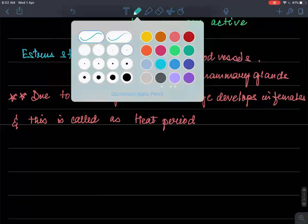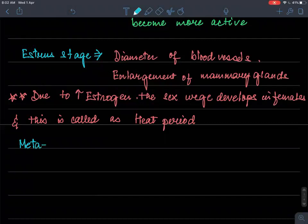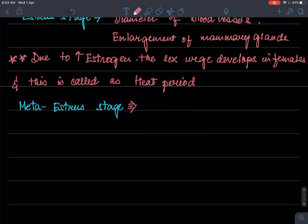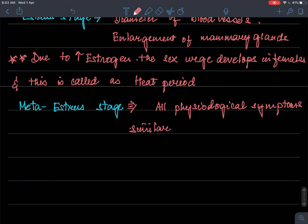The third stage is called as meta-estrus stage, where we can see that all physiological symptoms similar to normal pregnancy even in absence of fertilization.